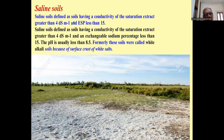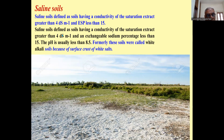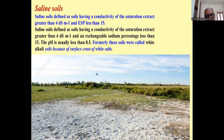Saline soils are defined as soils having a conductivity of the saturated extract greater than 4 dS/m and exchangeable sodium percentage less than 50. The pH is usually less than 8.5. Formerly, these soils were called white alkali soils because of the surface crust of white salts.